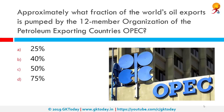Approximately what fraction of the world's oil exports is pumped by the 12-member Organization of the Petroleum Exporting Countries, OPEC? The correct answer is 50%. OPEC is an intergovernmental organization of 14 nations founded in 1960 in Baghdad by its first five members — Iran, Iraq, Kuwait, Saudi Arabia, and Venezuela — and headquartered since 1965 in Vienna, Austria.